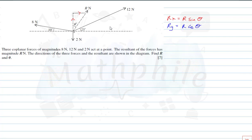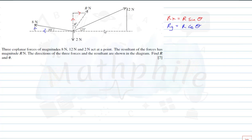Now let's look at the other three forces — 8 newtons, 12 newtons, and 2 newtons. For the 2-newton force, there are no issues because it sits on the negative y-axis and doesn't need to be resolved. But for the 12 and 8 newton forces, we need to break them into component parts — each will have a horizontal and a vertical component.